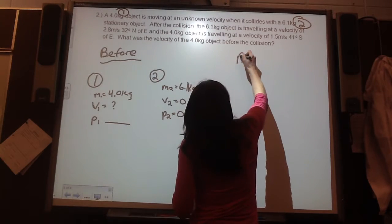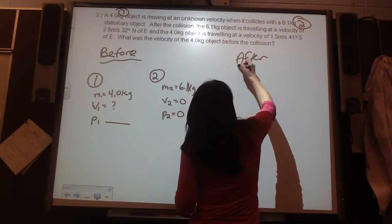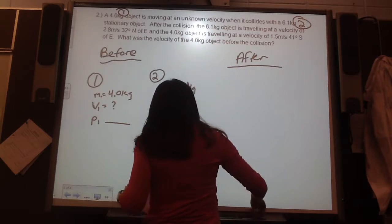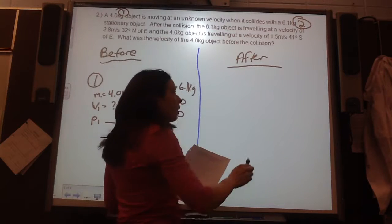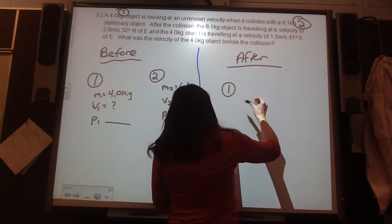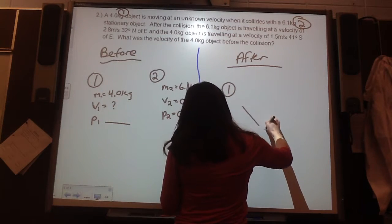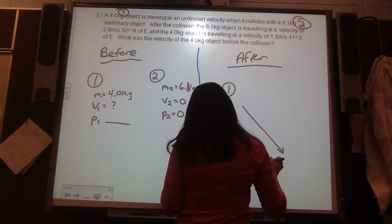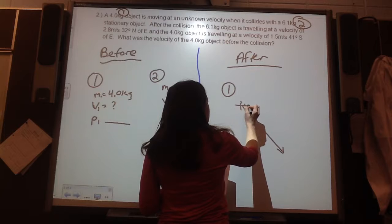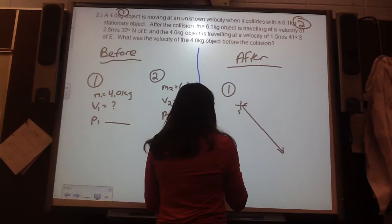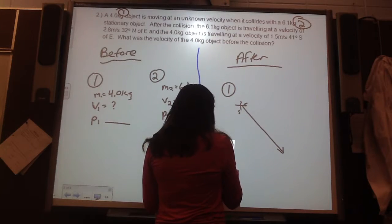Okay, so now after, I'm just going to separate this. After object 1, it's going at an angle south-east. So, here's east, and here's south. That's object 2.